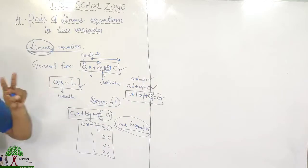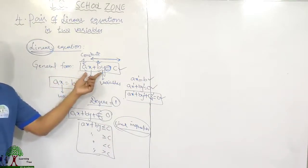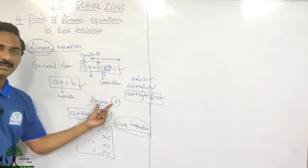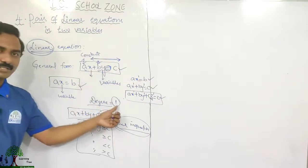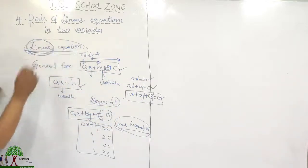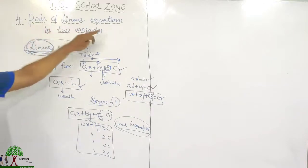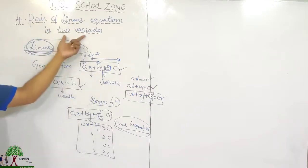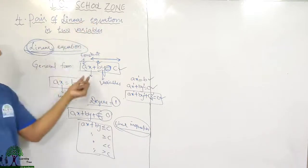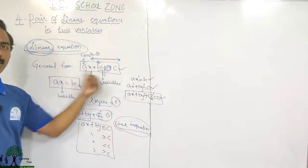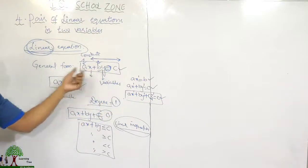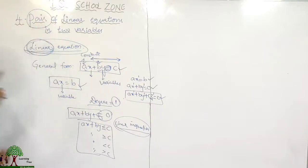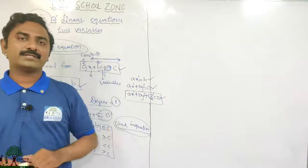So there are two ways to identify a linear equation: draw a graph and if you get a straight line, it is linear; or simply check the degree — if degree is one, it is a linear equation. In this chapter, we are going to study a pair of linear equations in two variables, examining two linear equations together with variables like X and Y.